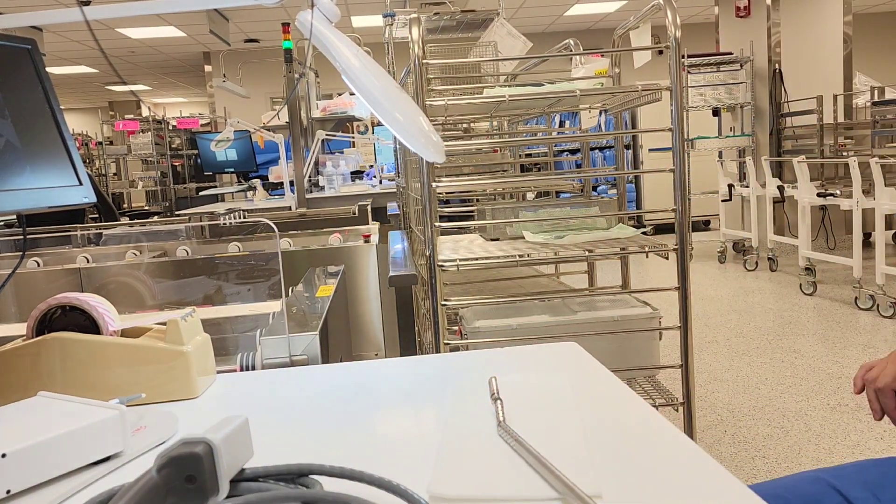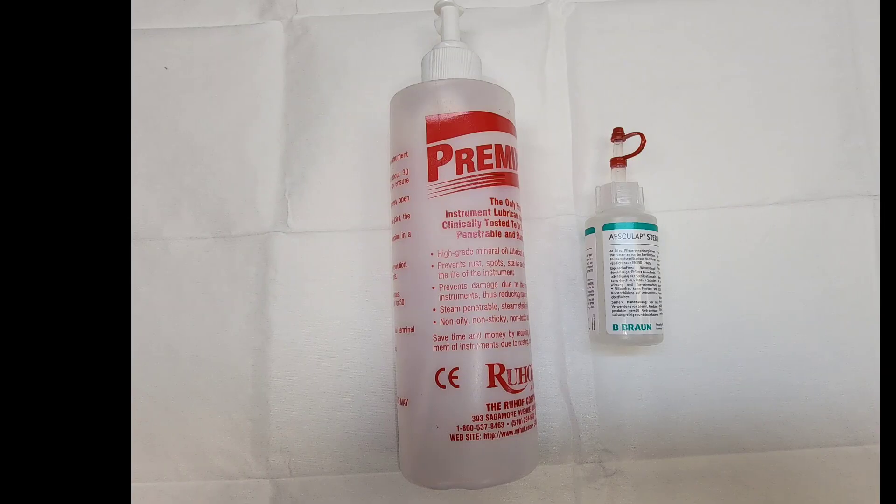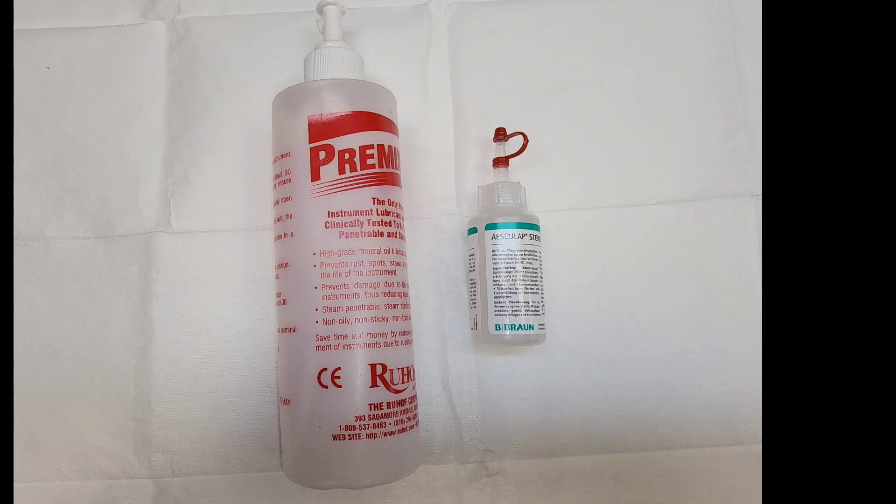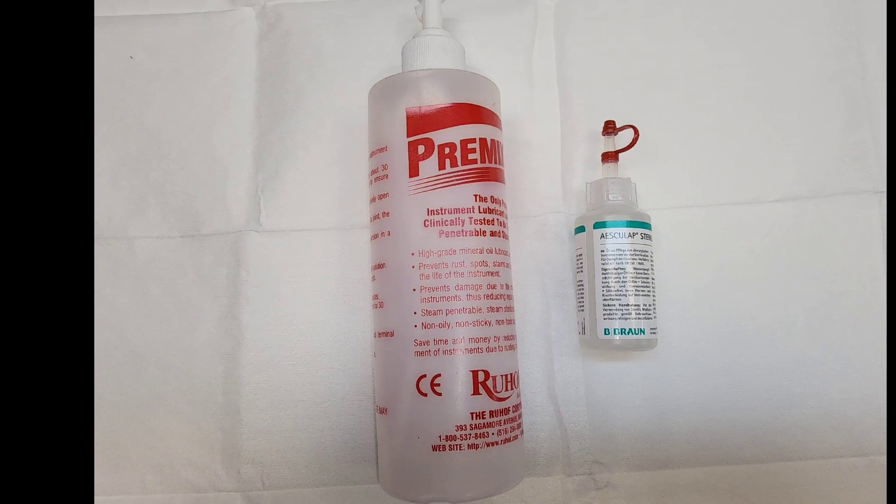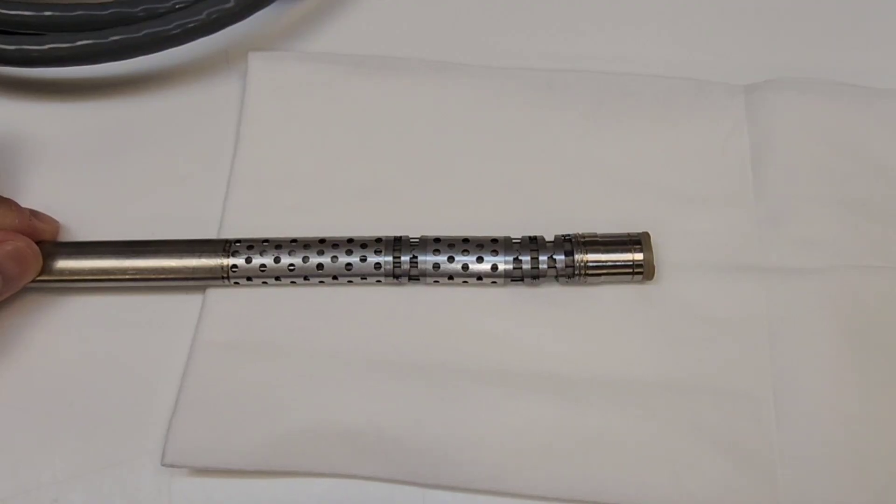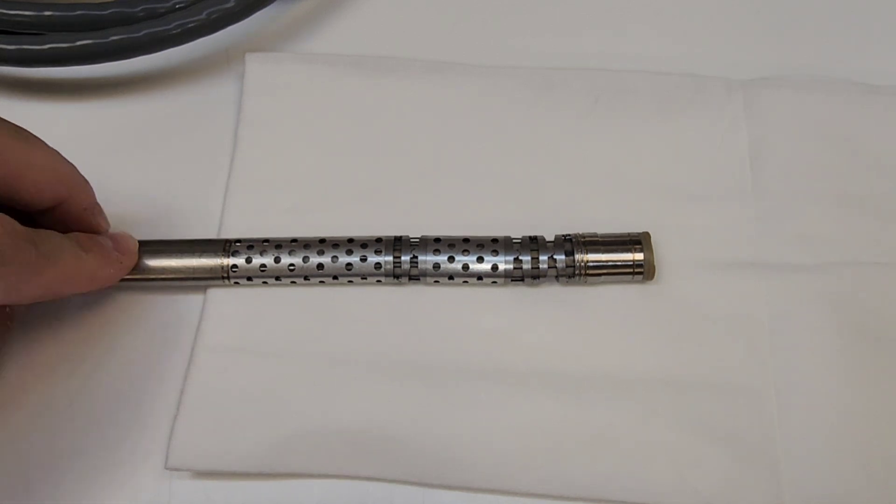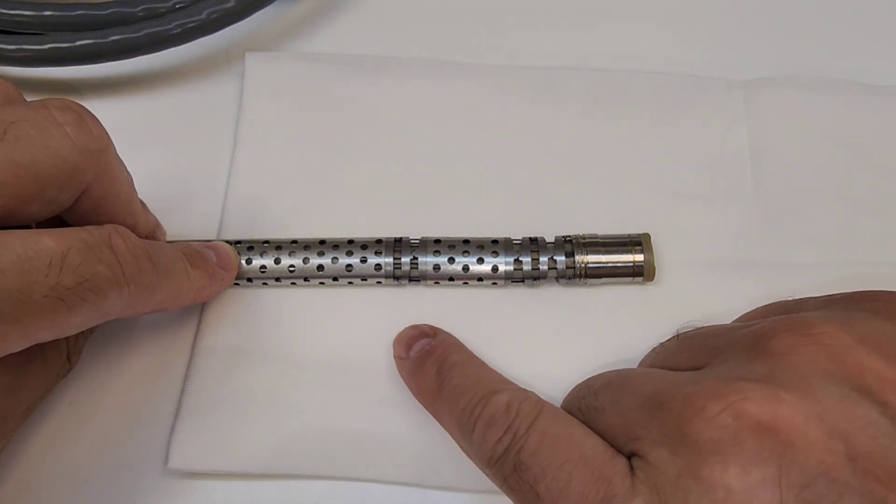After inspection, everything looks nice and clean. What is next? It's lubrication of the tip. Make sure the brand you have is able to withstand the sterilization process of steam sterilization and that it can be penetrable. This is the distal tip of the device. There are certain points that need to be lubricated, and there's six of them all together.